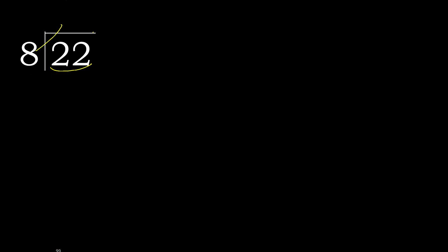22 divided by 8. 2 is less, therefore next. 22 is not less — with 22, 8 multiplied by which number is nearest to 22 but not greater?